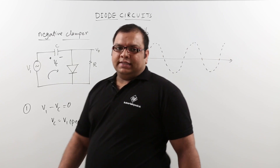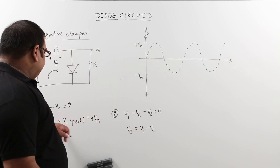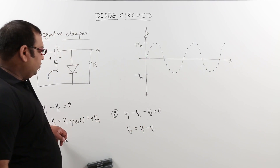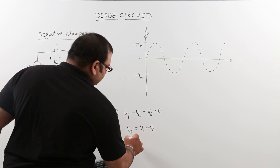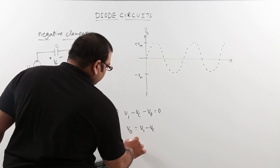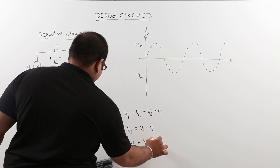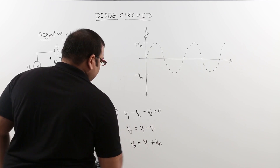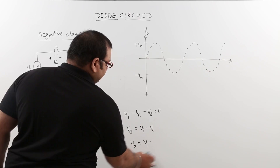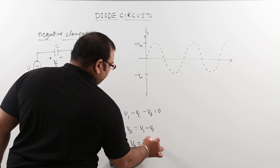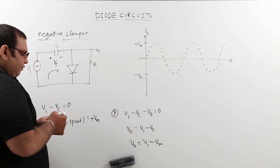Here, Vi is the input waveform and Vc is charged to plus Vm. Substituting the values: V0 equals Vi minus Vm. This is the output waveform equation.